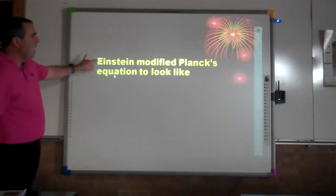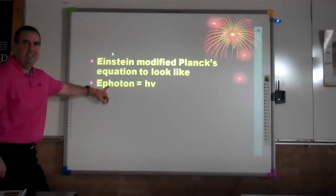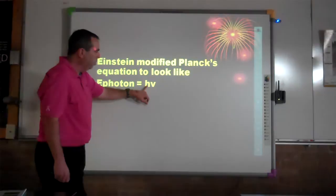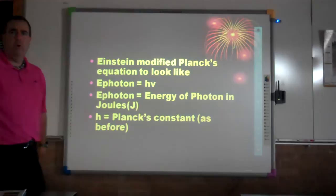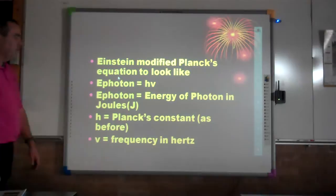It took Einstein to put both ideas together to come up with the photon. Einstein modified Planck's equation so that instead of quantum energy, it's photon energy. Photon energy equals Planck's constant h (6.62 × 10⁻³⁴ joules·seconds) multiplied by frequency. So photon energy is measured in joules, Planck's constant in joule·seconds, and frequency in hertz.